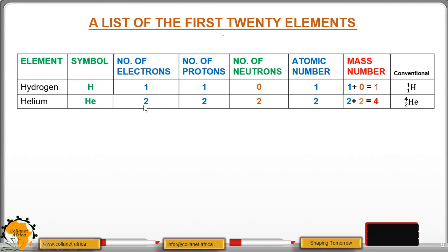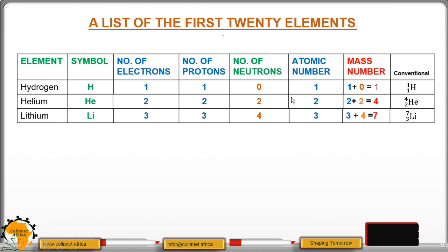We continue to helium, which is the second atom in the periodic table. We have 2 electrons, 2 protons, 2 neutrons, and the atomic number is equal to the number of protons, so this one is 2. The mass number is the number of protons plus neutrons to get 4, conventionally written as 4 as the mass number, and then we have 2 as the atomic number.